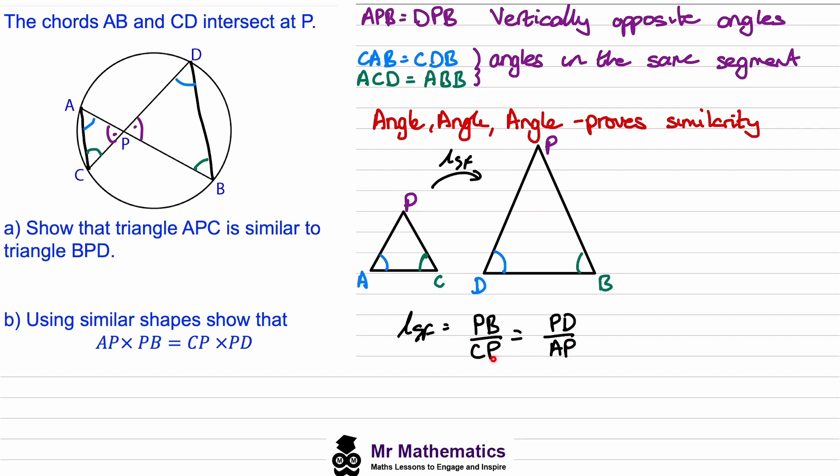So AP multiplied by PB will be exactly the same as CP multiplied by PD, and this is the property we were asked to show.